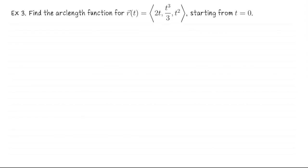Okay, let's finish with an example of finding the arc length function that we just described for the parametric curve r of t equals 2t, t cubed over 3, t squared, starting from t equals 0.